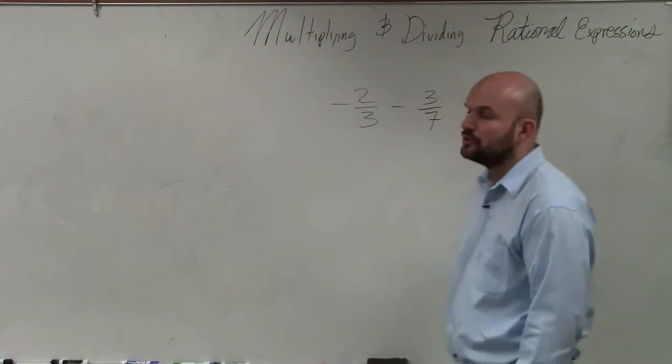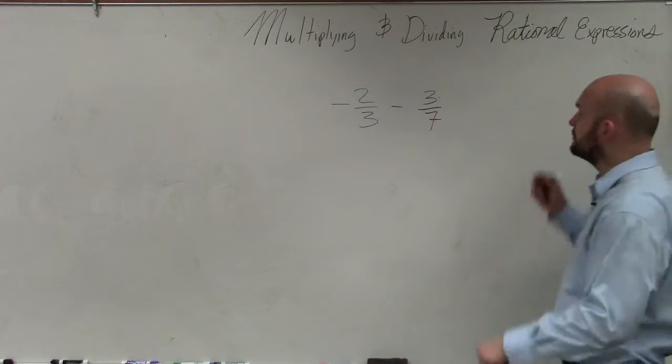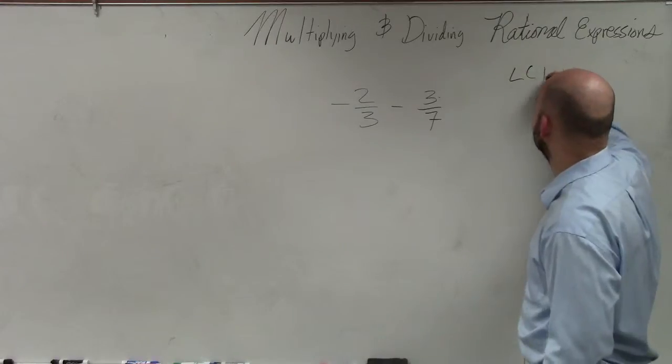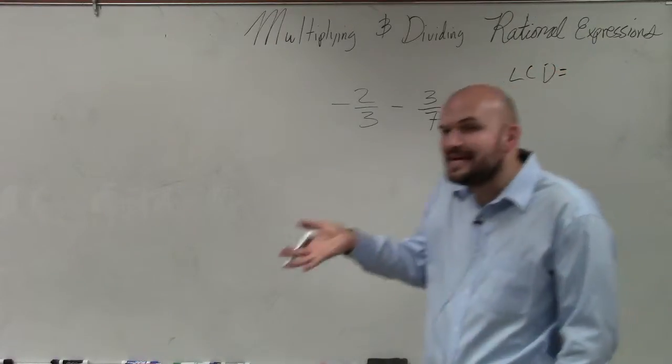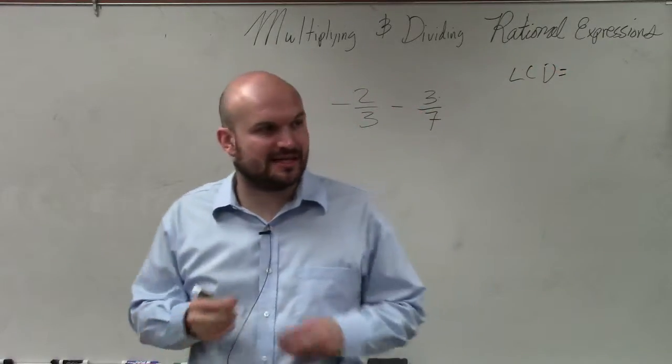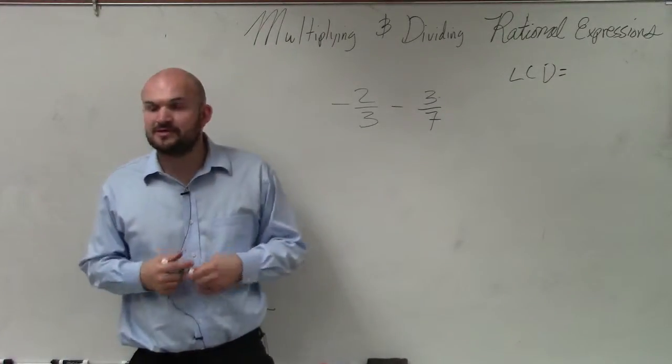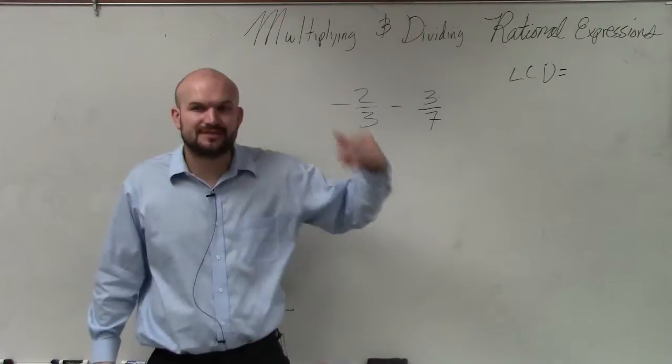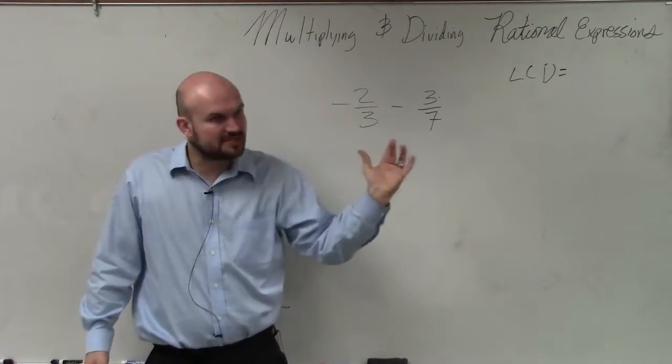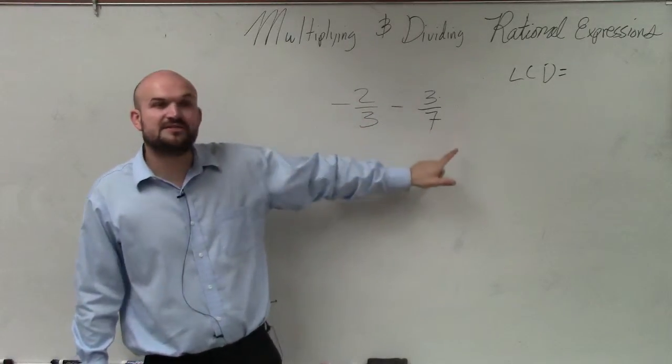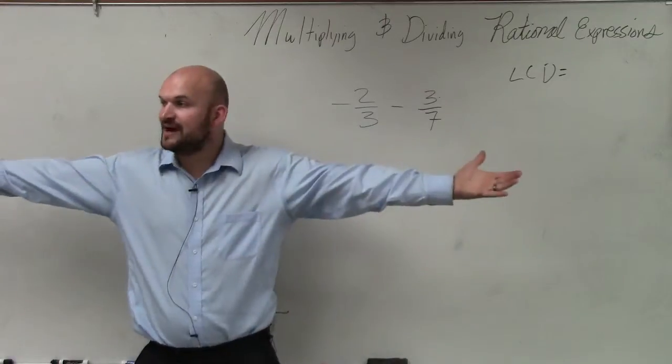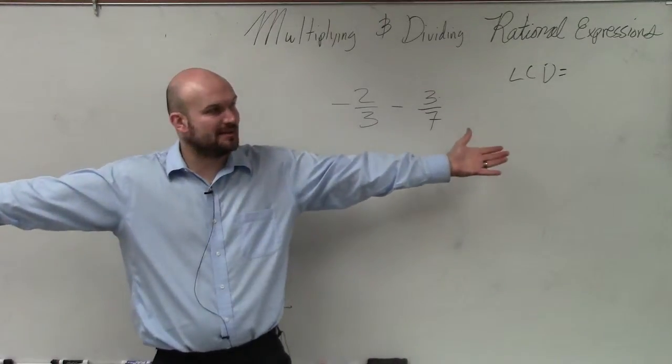So basic rule of process for adding and subtracting rational expressions is determining the LCD. Now, the tip for finding the LCD is the easiest way to find the LCD is to simply multiply your two denominators because what the LCD represents is your least common denominator, the smallest number that both your denominators divide into. So an easy way to always find a number is to multiply your two denominators.